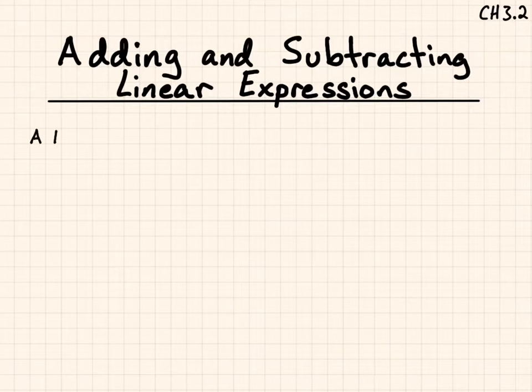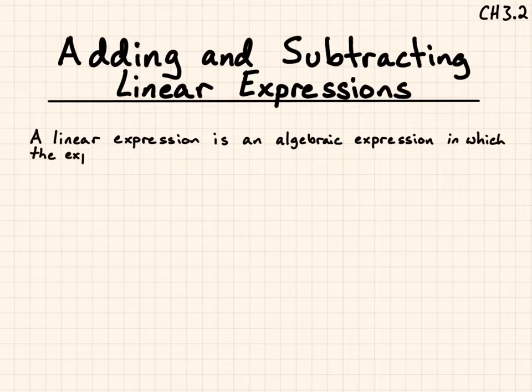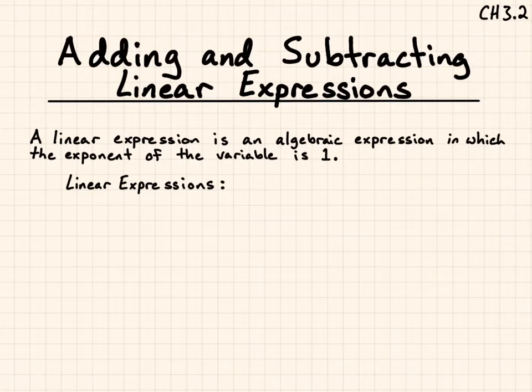First off, a linear expression. A linear expression is an algebraic expression in which the exponent of the variable is 1. Examples of linear expressions would be 2x, because you can see that the exponent of the variable is 1. x by itself has an exponent of 1.